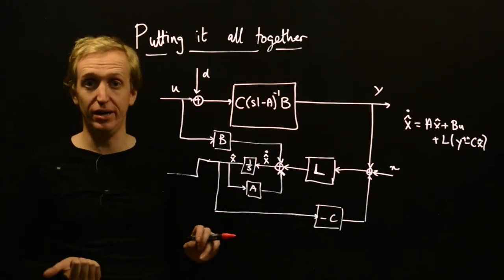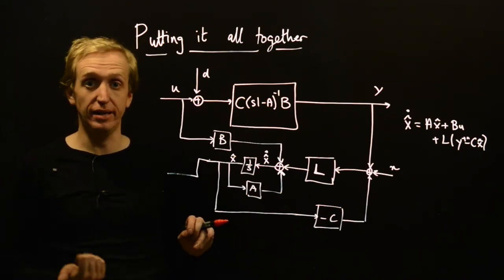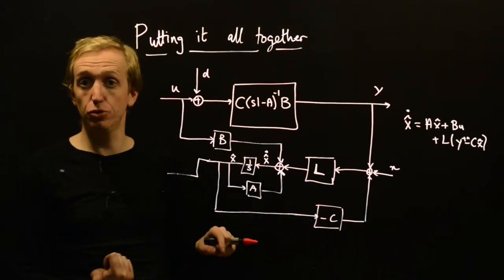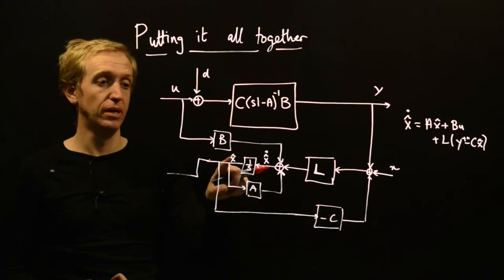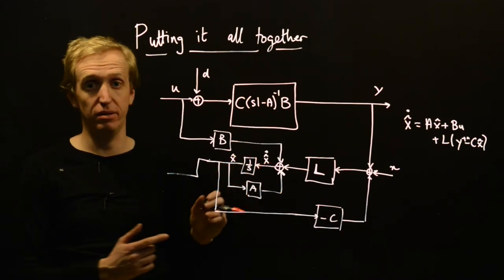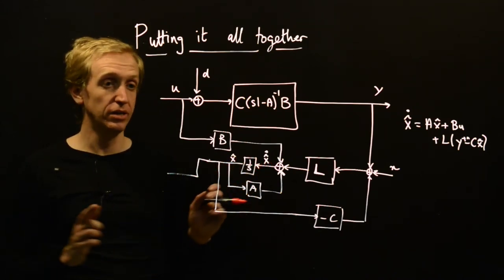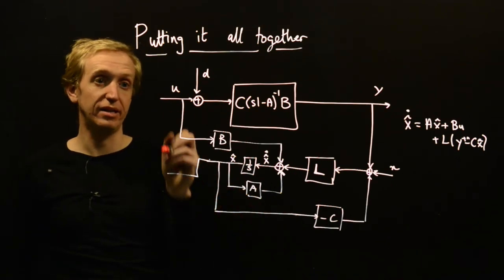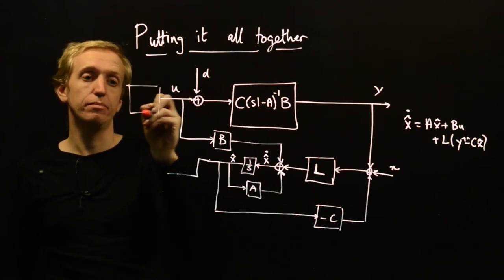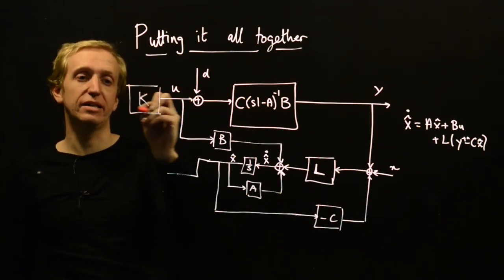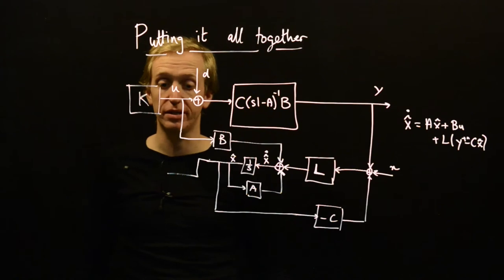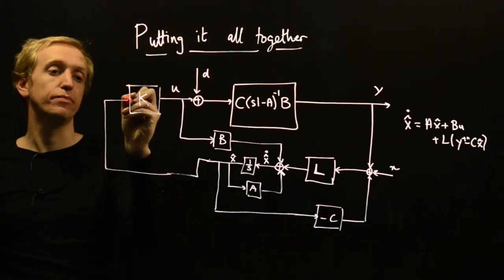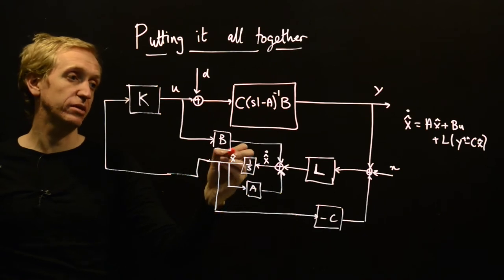Well, we know how to design state feedback based on the true state. As long as our observer is pretty good, the true state and our estimate of the state are going to get extremely close to each other. So let's just use our state feedback K. This K matrix that we were designing with our state feedback, and let's use as input our state estimate X hat.